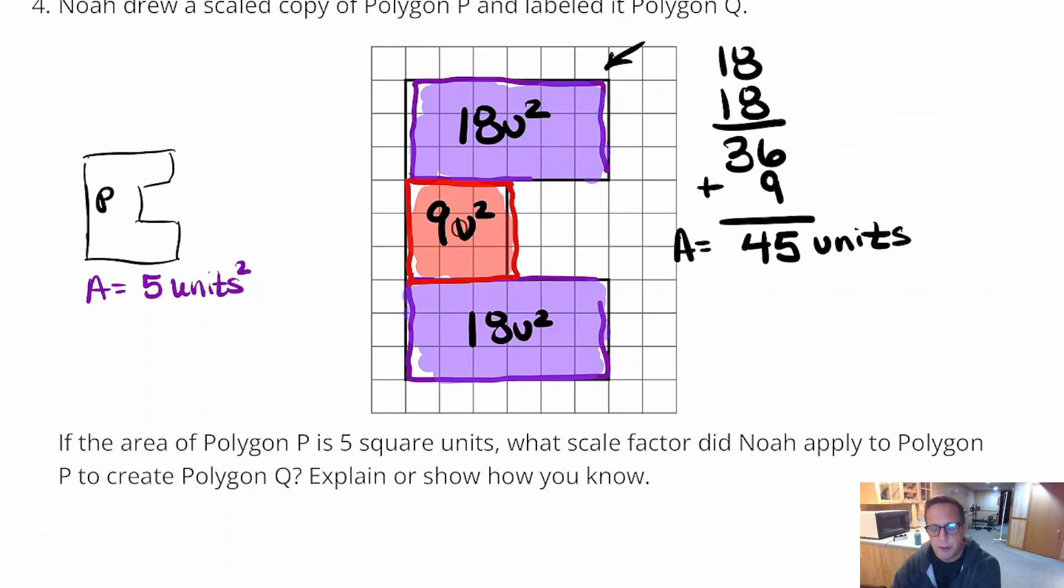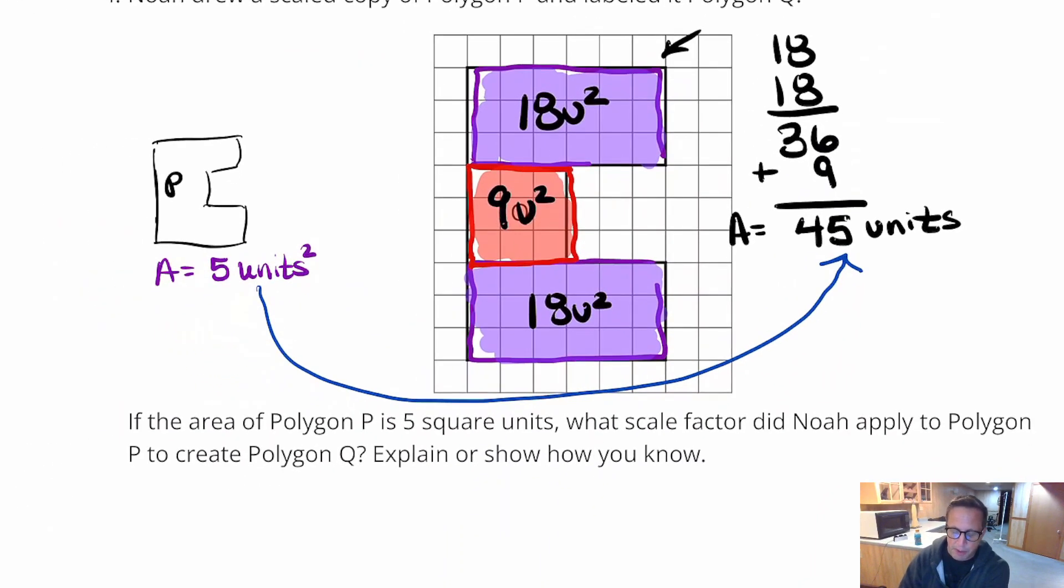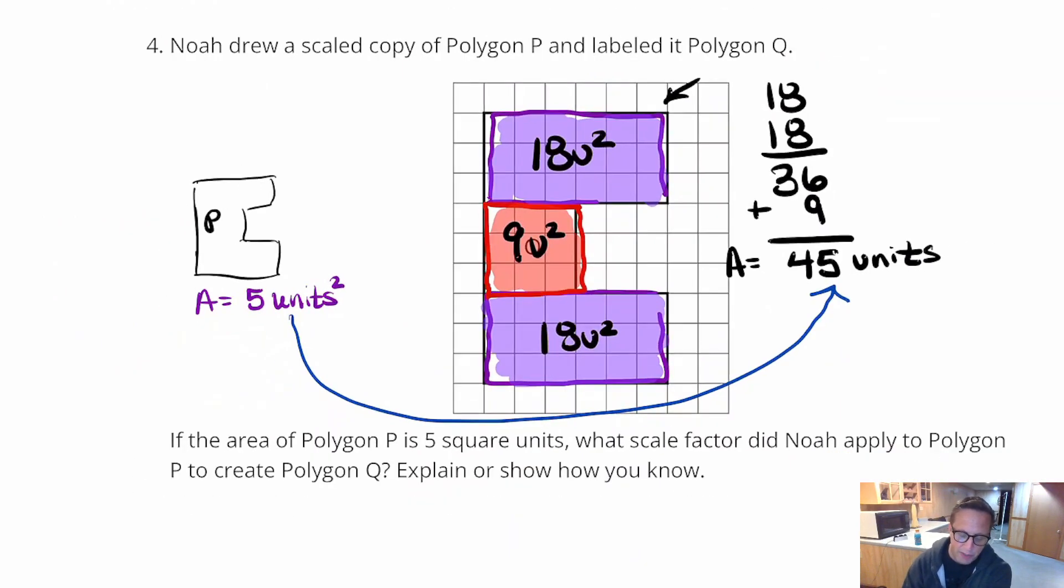It went from 5 to 45. So, that's 9 times bigger. The area is 9 times bigger. But, that doesn't tell us the scale factor. Remember, scale factor is not always going to equal the same thing as how many times the area. It's not going to be a one-to-one relationship.